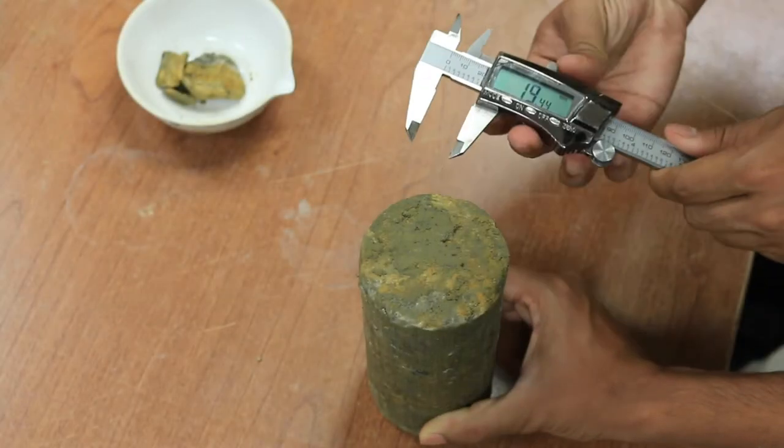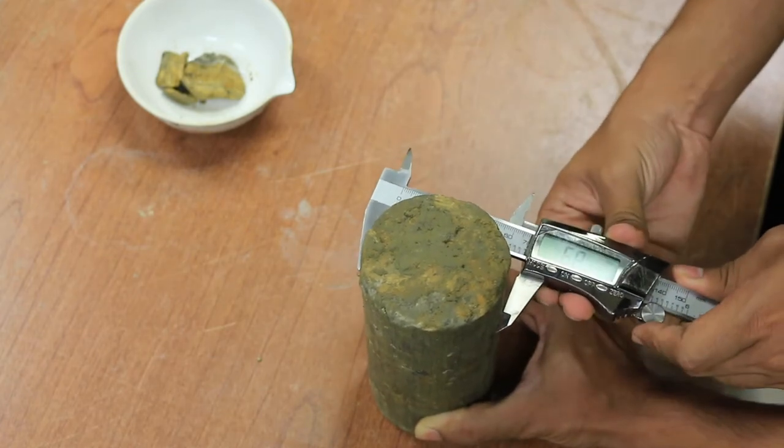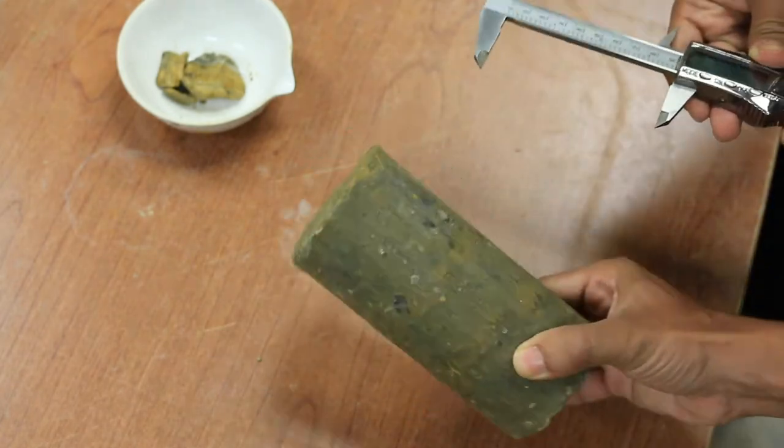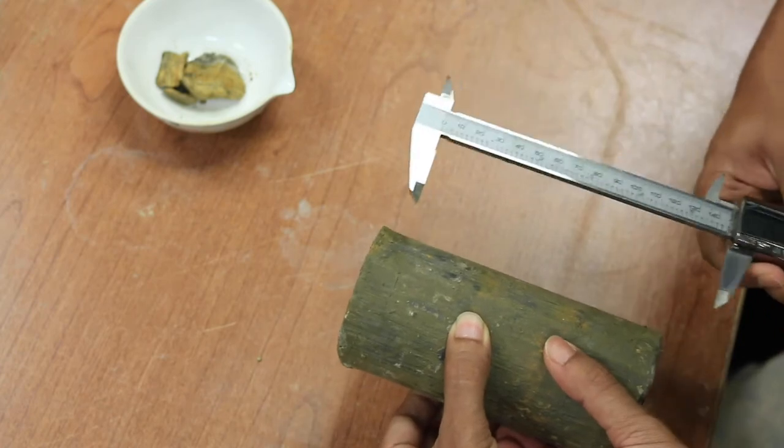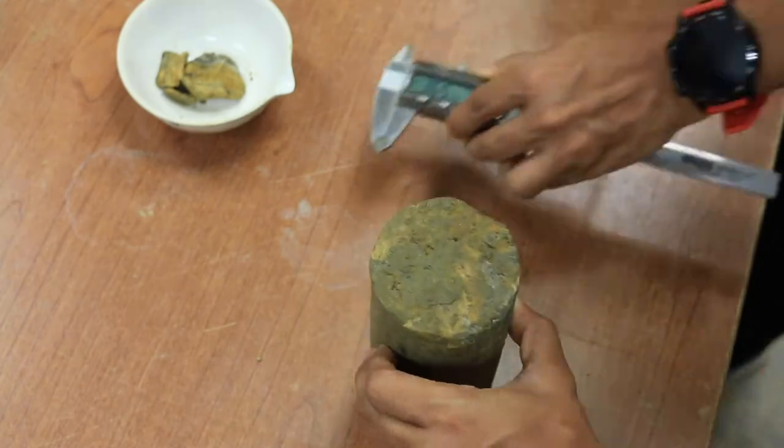First we need to take an undisturbed soil sample. The sample should be shaped so that the height to diameter ratio will be between 2 to 2.5. Some cut samples should be taken to measure the initial moisture content.